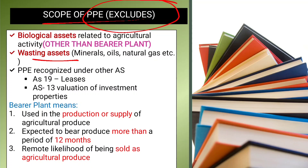PPE recognized under AS19 Leases and AS30 Valuation of Investment Properties are also excluded from AS10. However, bearer plants are not excluded — they are included under AS10. So what is a bearer plant? Bearer plants are used in the production or supply of agricultural produce.